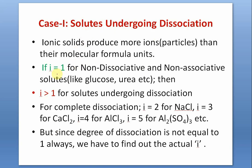Case 1: solutes undergoing dissociation. Ionic solids produce more ions — more particles — than their molecular formula units. One mole of NaCl if completely dissociated produces two moles of particles. If i = 1 it is the non-dissociative or non-associative case like glucose, urea, sucrose. For dissociation, i must be greater than 1. For complete dissociation: i = 2 for NaCl, i = 3 for CaCl₂, i = 4 for AlCl₃, because one mole of AlCl₃ produces one mole of Al³⁺ and three moles of Cl⁻.